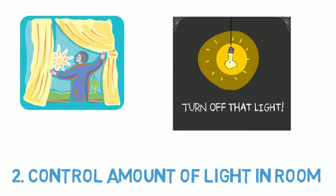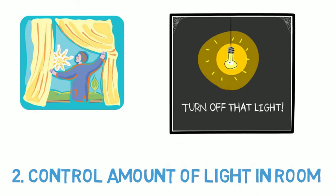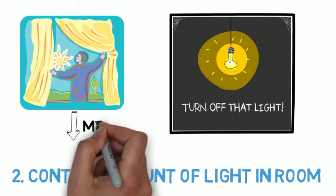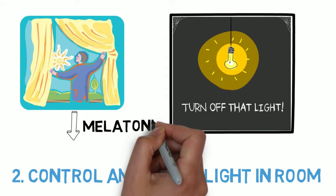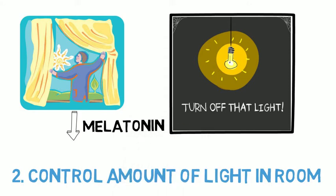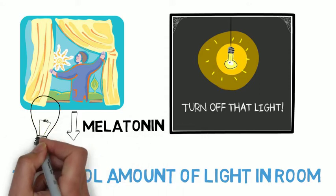Number two, in the morning, let light in and at night switch lights off. Light exposure decreases the release of the sleepiness hormone melatonin. So to facilitate waking up with energy, open the curtains or turn on the lights.